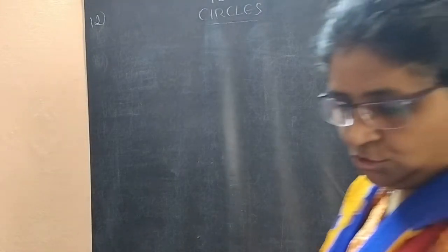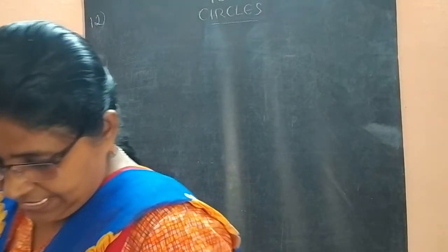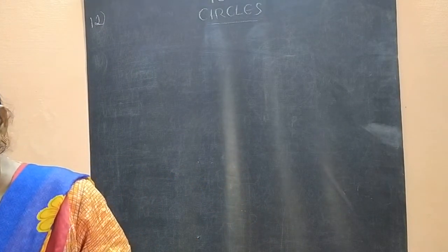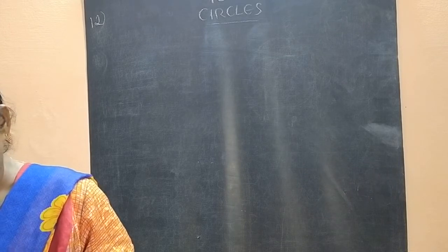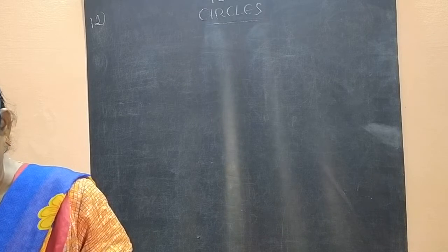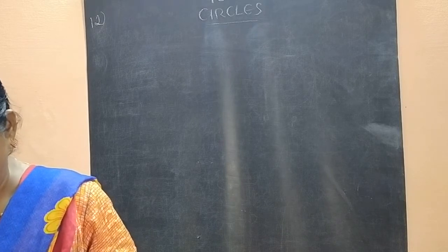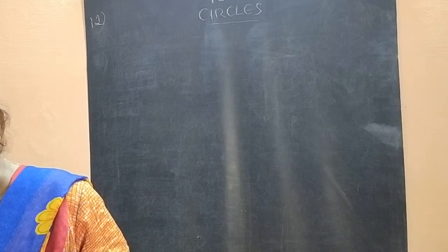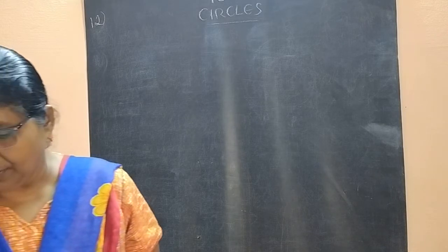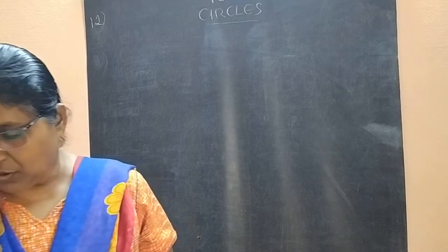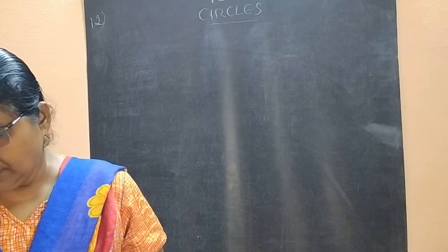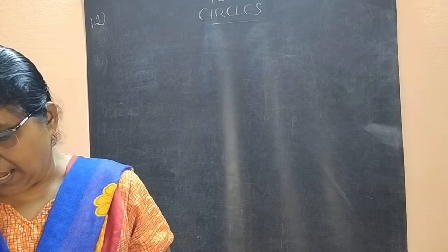Question number 12. A triangle ABC is drawn to circumscribe a circle of radius 4 cm such that the segments BD and CD into which BC is divided by the point of contact D are of lengths 8 cm and 6 cm. Find the sides AB and AC.